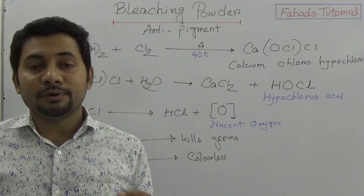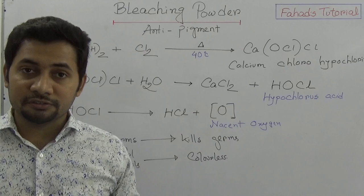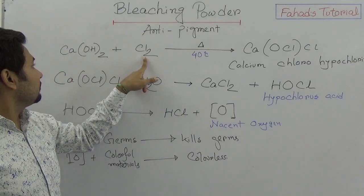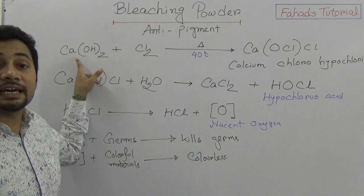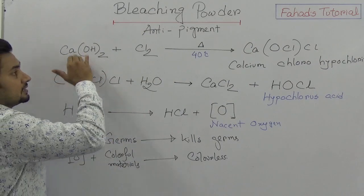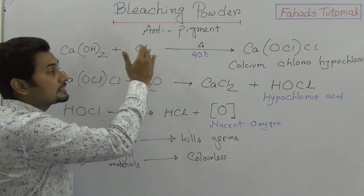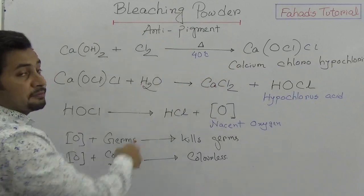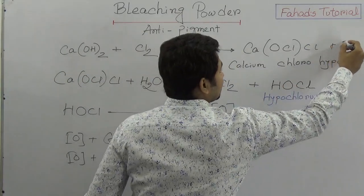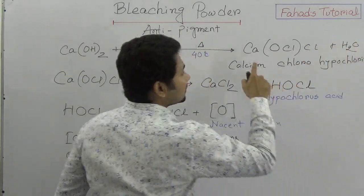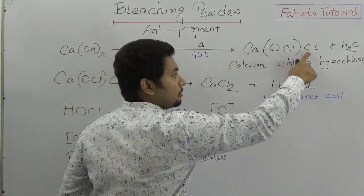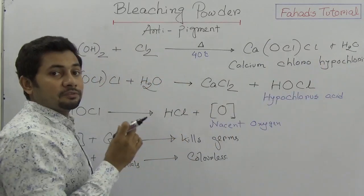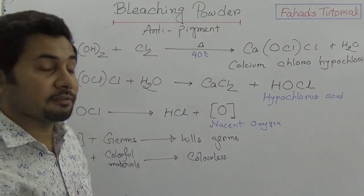In summary, bleaching powder is produced by channeling chlorine gas through lime water — that is, calcium hydroxide. When calcium hydroxide reacts with chlorine gas at 40 degrees Celsius, it produces calcium chlorohypochlorite and water. The name to remember is calcium chlorohypochlorite.